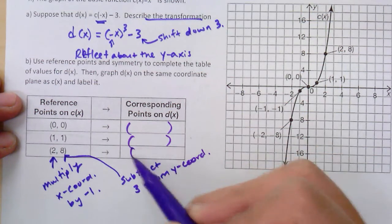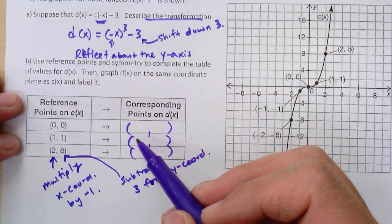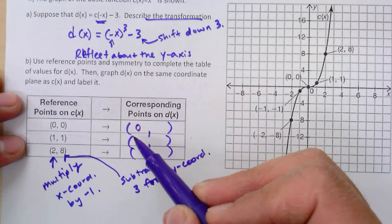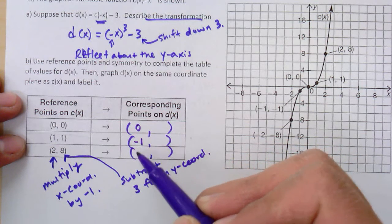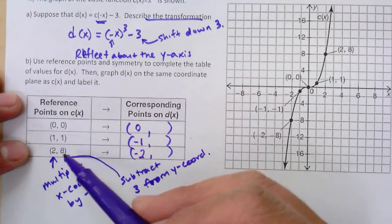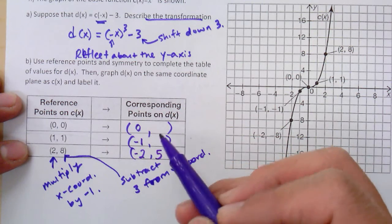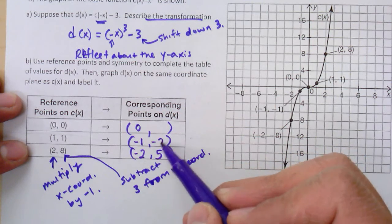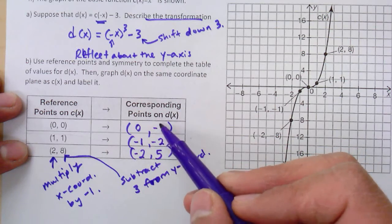So here's my three new points. 0 times negative 1 is 0. 1 times negative 1. 2 times negative 1. 8 minus 3 is 5. 1 minus 3 is negative 2. And then 0 minus 3 is there.